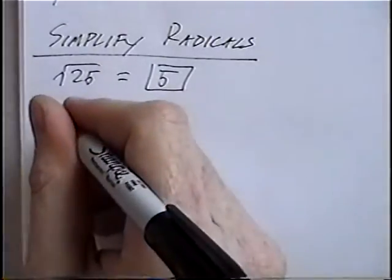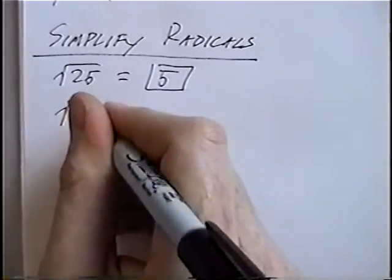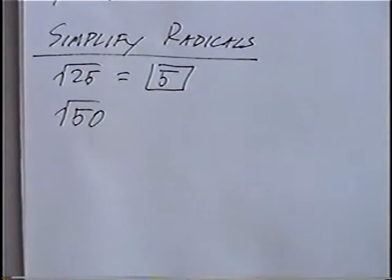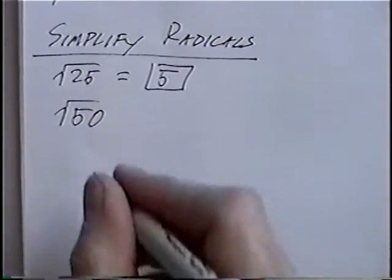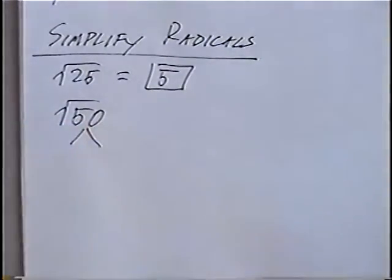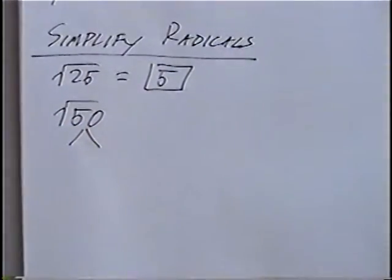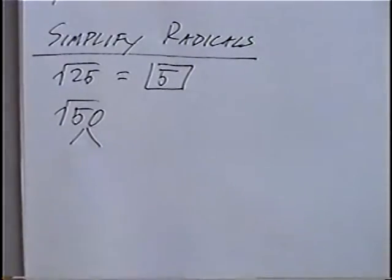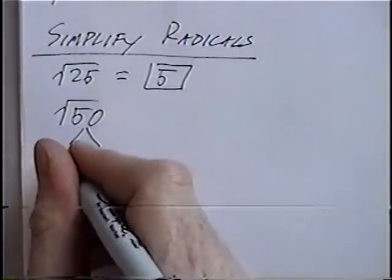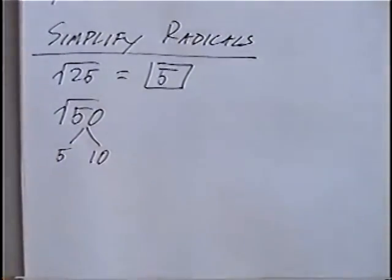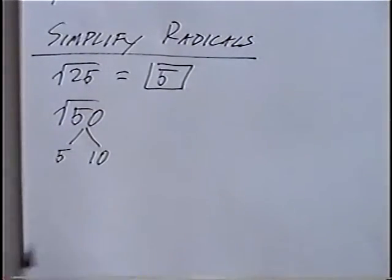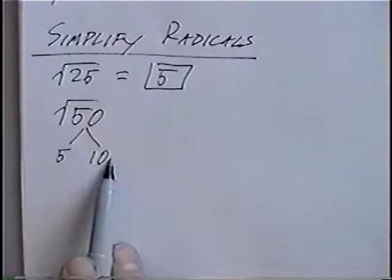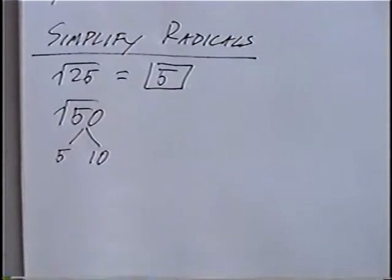The second question is radical 50, or square root of 50. In this case there's no whole number times itself that equals 50. So to solve this question we'll use a factor tree. We'll pick two numbers that multiply to get 50, for example 5 times 10. You can use any two numbers you want — you could also use 25 and 2. It doesn't matter which numbers you pick as long as they multiply to 50.